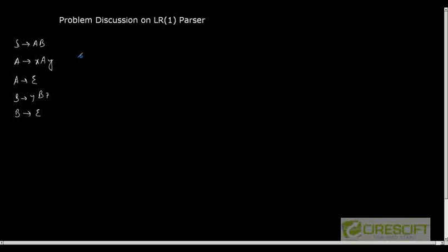Hi students, today we are going to discuss one of the problems you have asked: how to create an LR1 parse table for a given grammar. The problem looks like this. We have a set of productions for the grammar: S is equal to AB, then A has productions XAY and epsilon, and B has productions YBZ and epsilon.